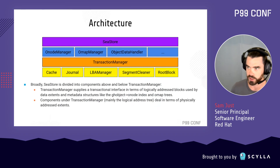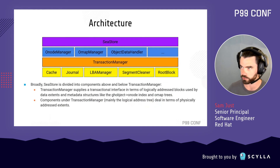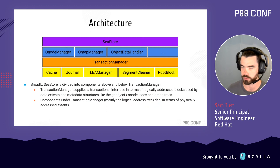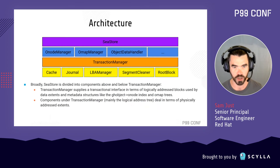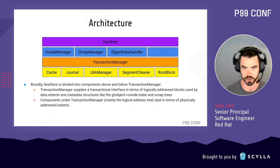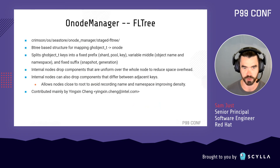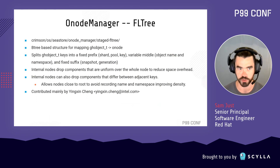From an architectural standpoint, C-Store is divided broadly into two areas: above and below a transaction manager abstraction. The transaction manager supplies a transactional interface in terms of logically addressed blocks used by data extents and metadata structures like the GH object to O node mapping. Components under the transaction manager deal in terms of physically addressed extents — the main component there is the LBA tree itself. The advantage of this separation is that components above the transaction manager do not need to know anything about garbage collection; it's completely transparent to them.